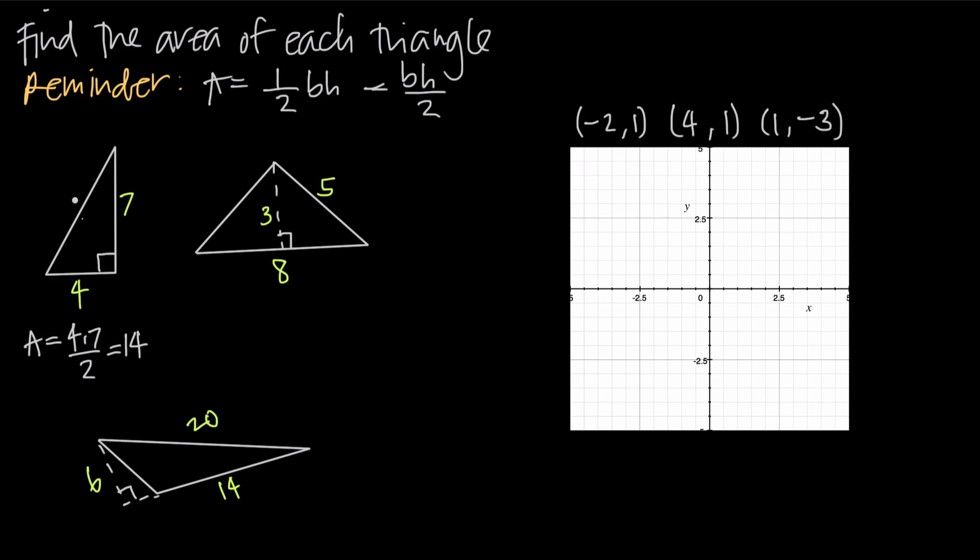The reason that this works is because if you think about it, all we're really doing is finding the area of the rectangle that this triangle would create. If we sketched out this rectangle here and we wanted to find the area of the rectangle, we would just say base times height for the rectangle to get the area. So 4 times 7 would be 28. That would be the area of the entire thing.